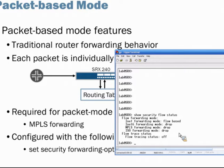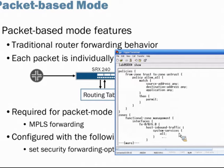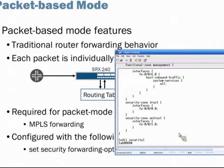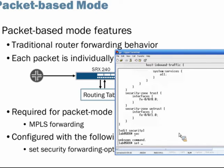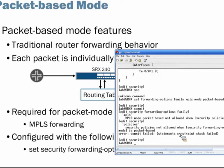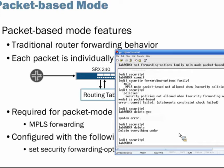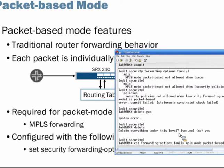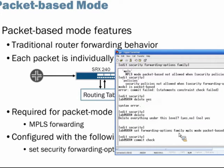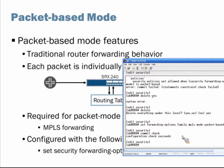Now let's enter configuration mode and look at the security hierarchy configuration. Here we have security policies and security zones set up, with interfaces applied to those zones. I can configure the command to put this into packet-based mode, but if I try to commit that command, I'll get an error — I'm not able to do it while there's other flow-based configuration on the device. I would have to first remove that configuration. Also, the SRX device requires a reboot when changing from flow-based mode to packet-based mode, so I'm going to roll back that change.